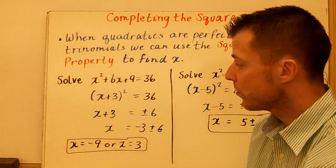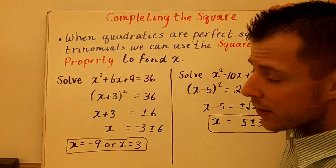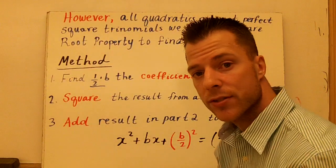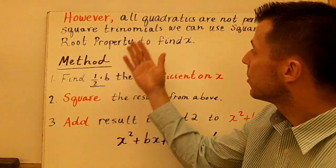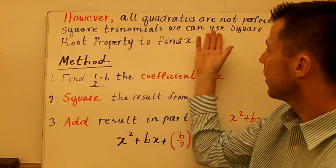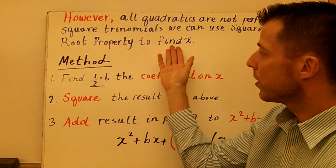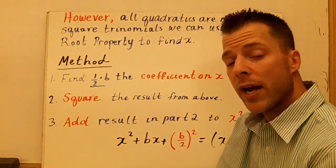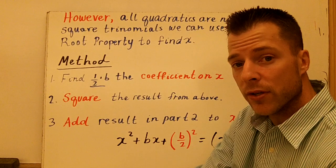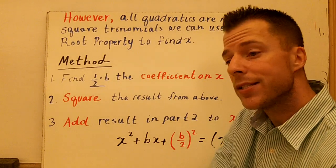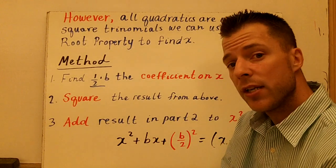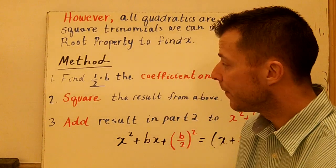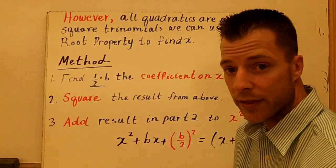These examples are just reviewing what the square root property is — it's just a method to solve quadratics. The big thing here is that not all quadratics are perfect squares. If they're not perfect squares, we still want to use the square root property to find x. So by completing the square, we're actually taking a trinomial — a quadratic that is not a perfect square — and turning it into a perfect square so we can use this property. That's the idea, and there are three steps to this method.